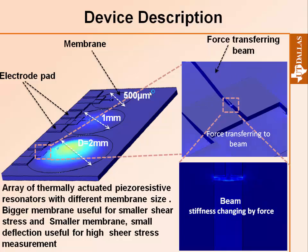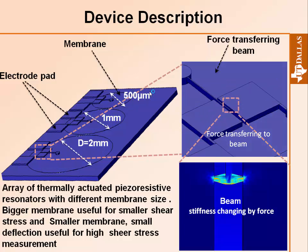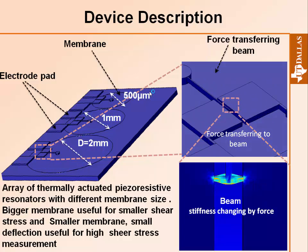We fabricated an array of different membrane sizes. For the same amount of stress applied to the back side, a bigger membrane has a higher deflection, so sensitivity increases with membrane size. This animation shows a cross-section of this part, illustrating how membrane deflection transfers to the resonant beam. The stress analysis by COMSOL shows how bending changes the stress and in turn changes the stiffness of the resonant beam.